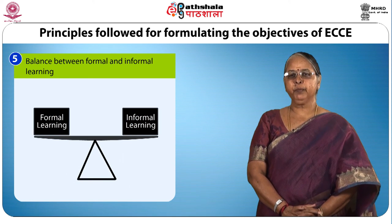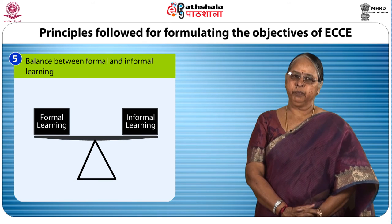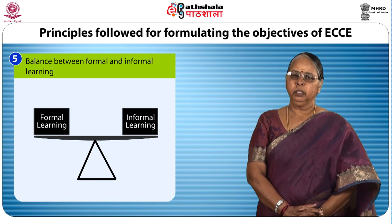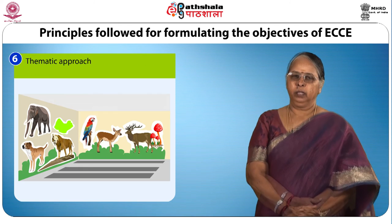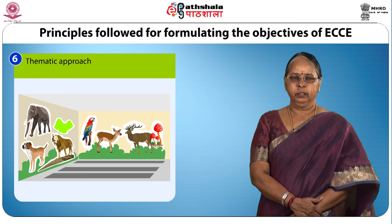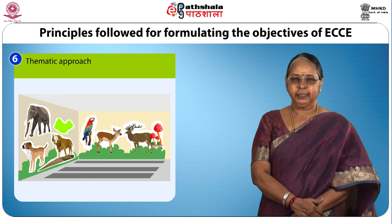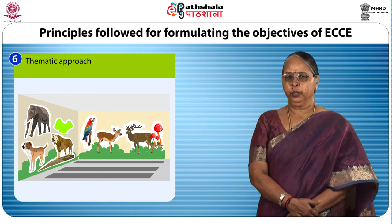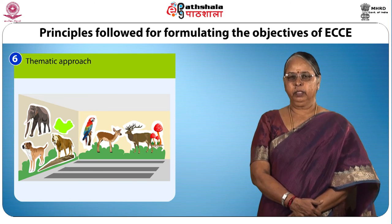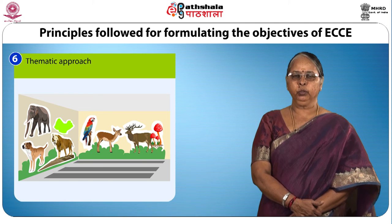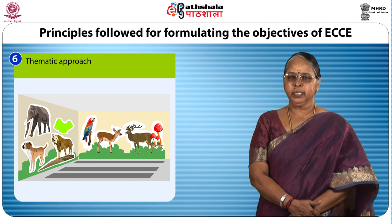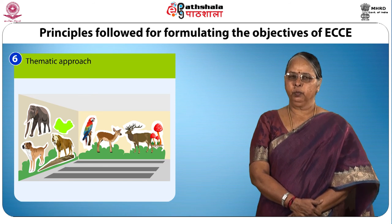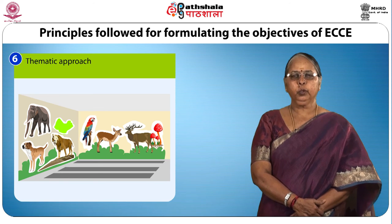Next is balance between formal and informal learning — there should be activities of both formal and informal types. Thematic approach: children enter ECCE centers without much orientation, so they have to be oriented with various themes to know about the world. Various themes such as family, community workers, colors, animals, etc. could be introduced.